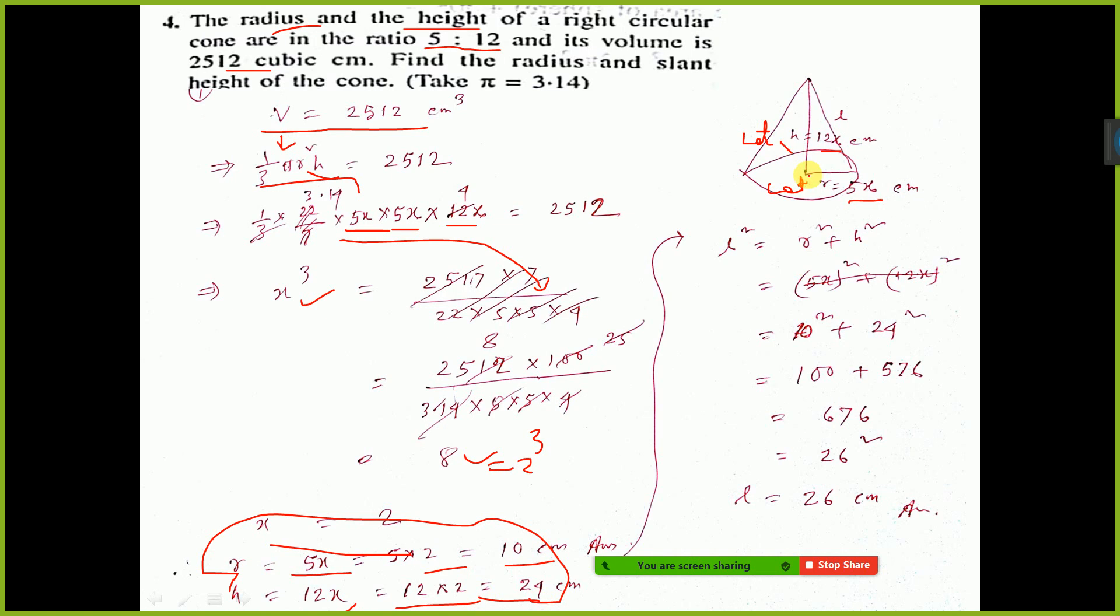Now, radius and height if you get, slant height you can do with the help of Pythagoras theorem: l square equal to h square plus r square. Now, put the value of r square and value of r is 10 and h is 24. Then it is coming 676, that means 26 square.